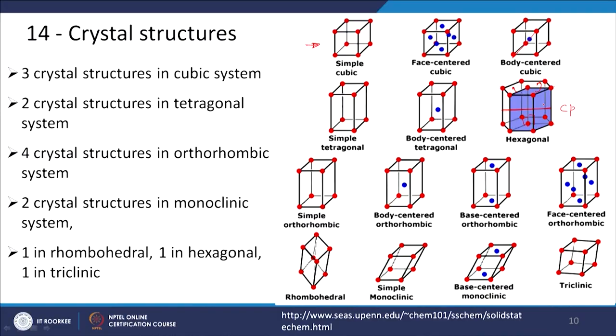With that I am finishing this lecture, in which we have covered the lattice, crystal systems, and crystal structures. Most metallic materials are either in body-centred cubic, face-centred cubic, or hexagonal close-packed structure, so we will use mainly these 3 to understand material behavior. Thank you for having patience and understanding this concept — little bit difficult but I think you will be able to catch it. Thank you.